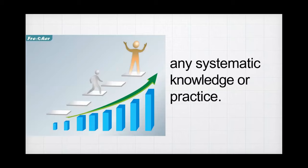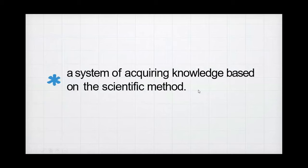When you say systematic knowledge, meaning you have an organized approach. When you are organized, you are following a procedure. When you say science, you have a procedure to follow — you don't just go to the end without starting from the beginning, like a ladder. Another definition is acquiring knowledge based on a scientific method.